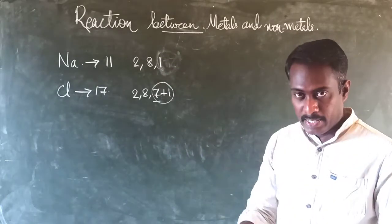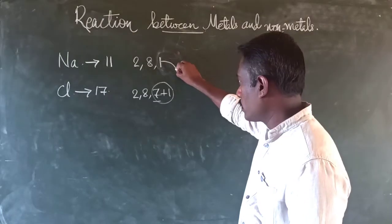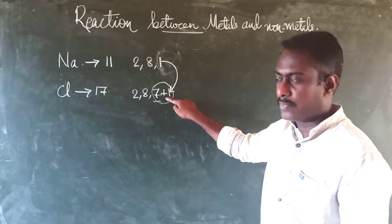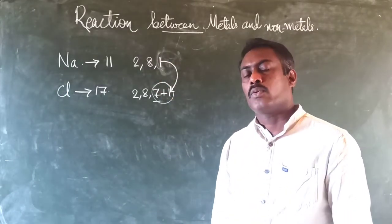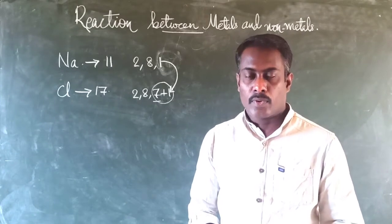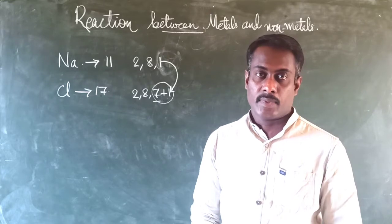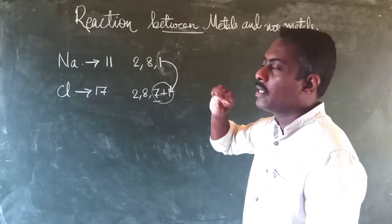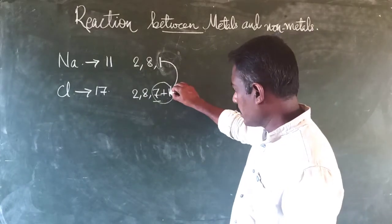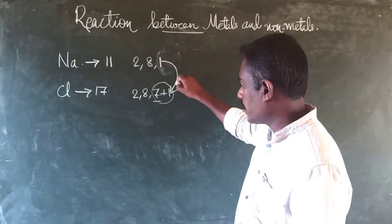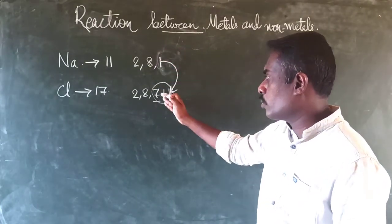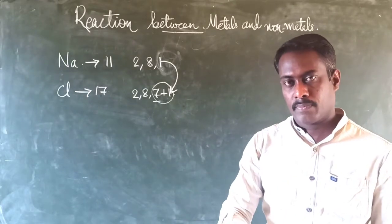Both sodium and chlorine will mutually get a stable configuration. This one electron is transferred from the outermost shell of sodium to the outermost shell of the chlorine atom. Here you see only the electrons from the outermost shell rearranging themselves to get a stable configuration. So both atoms of the elements will get a stable configuration. An electron carries energy, so energy is being transferred to the outermost shell of another atom.